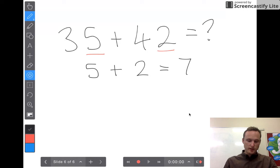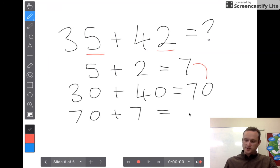What am I left with? I'm left with my tens units. I've got 30 and I've got 40. Again, rewrite the question: 30 plus 40 equals—you should know that one quite quick—70. Now again we are adding these two numbers together. 70 plus 7 equals 77.